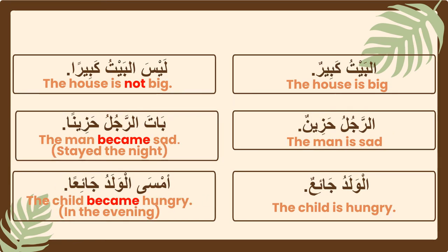Next example: البيتُ كبيرٌ — البيت is مُبْتَدَأ and كبيرٌ is خَبَر. But if كان وأخواتها enter the sentence, البيتُ changes from مُبْتَدَأ to إسمُ لَيْسَ, and كبيرٌ changes from خَبَر to خَبَرُ لَيْسَ. Notice how in the normal sentence the ending is with ضَمَّتَيْن, but when كان وأخواتها enter the sentence it changes to فَتْحَتَيْن.